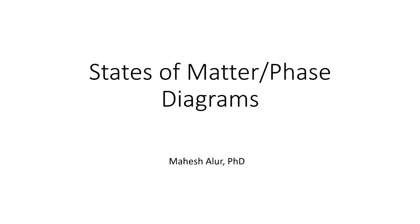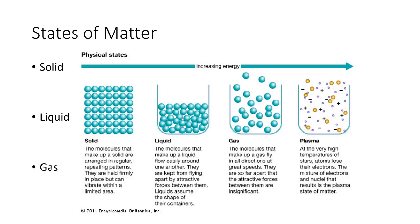In this video we're going to talk about states of matter, or phase diagrams. People sometimes say phases of matter instead of states of matter, but it's the same thing. There are three phases of matter we'll talk about in detail: solids, liquids, and gases. There is a fourth phase called plasma which we'll briefly mention but not cover in depth.